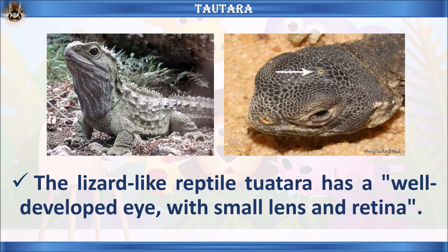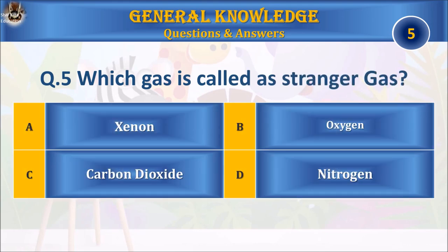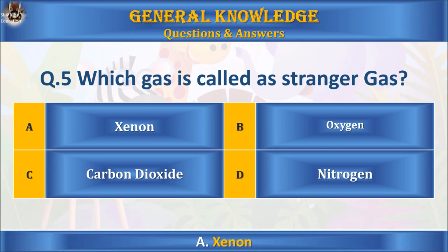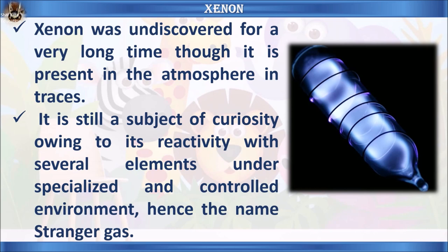Question 5: Which gas is called 'stranger gas'? A) Xenon, B) Oxygen, C) Carbon dioxide, or D) Nitrogen. Your time starts. The answer is A) Xenon. Xenon was undiscovered for a very long time. Though it is present in the atmosphere in traces, it is still a subject of curiosity owing to its reactivity with several elements under specialized and controlled environments — hence the name 'stranger gas'.